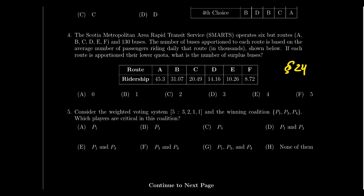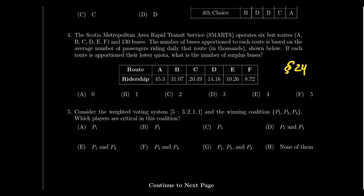Question 5 returns to weighted voting, but makes things harder. You'll be given a weighted voting system — for example, a quota of 5 with 4 players whose weights are 3, 2, 1, 1 — and a winning coalition, say players 1, 3, and 4. You'll need to determine which players are critical players. Critical players, from Lesson 22 on the Banzhaf power distribution, are those whose removal would turn a winning coalition into a losing one.